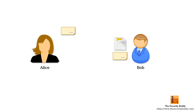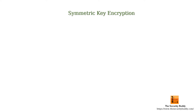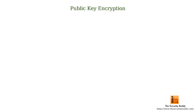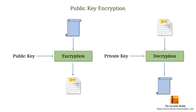The sender can encrypt the message using a secret key and send it across. The recipient can use the same key or a different secret key to decrypt and read the message. If the same secret key is used for both encryption and decryption, the encryption process is known as symmetric key encryption, and in public key encryption two different keys are used for encryption and decryption.